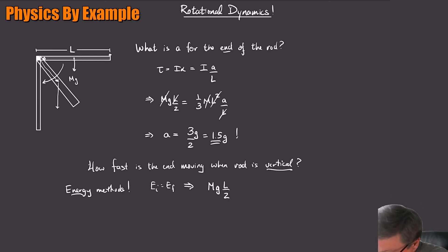So that's its initial energy. The final energy is now the center of mass is at, we're going to call this down here, that's the zero point. So it's all kinetic, the final one. So the final kinetic, what is rotational kinetic energy? It's just one half I omega squared.